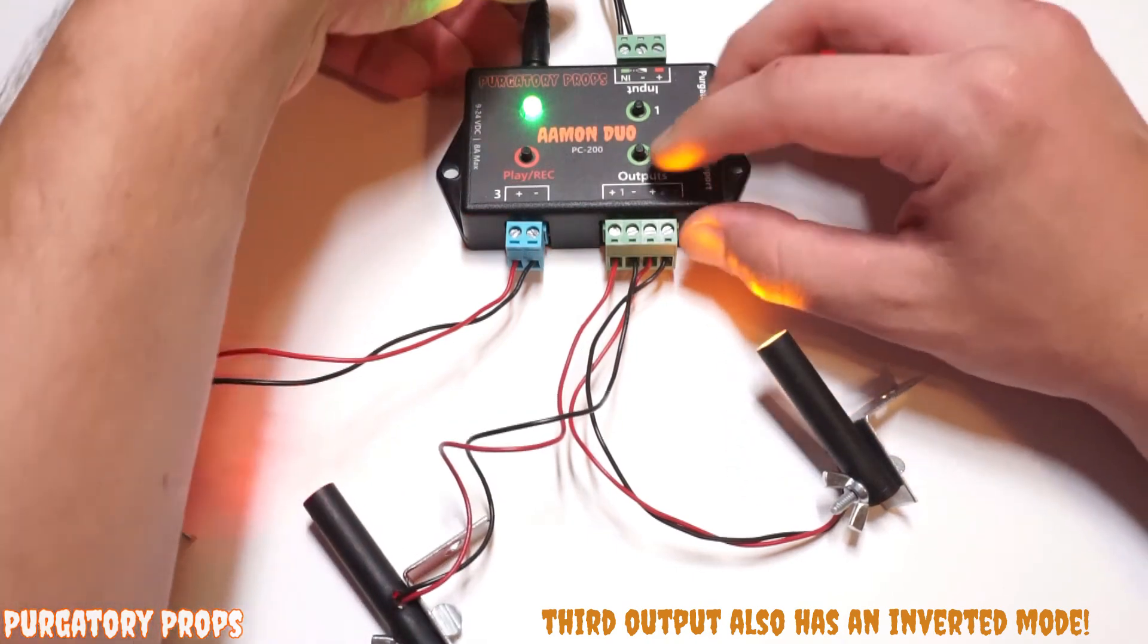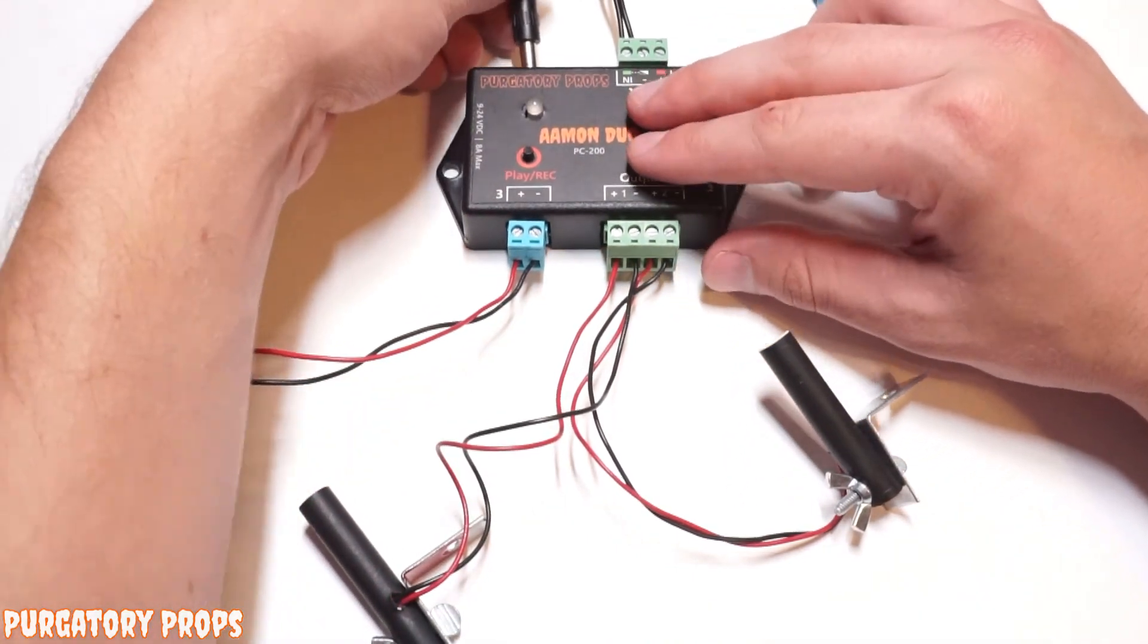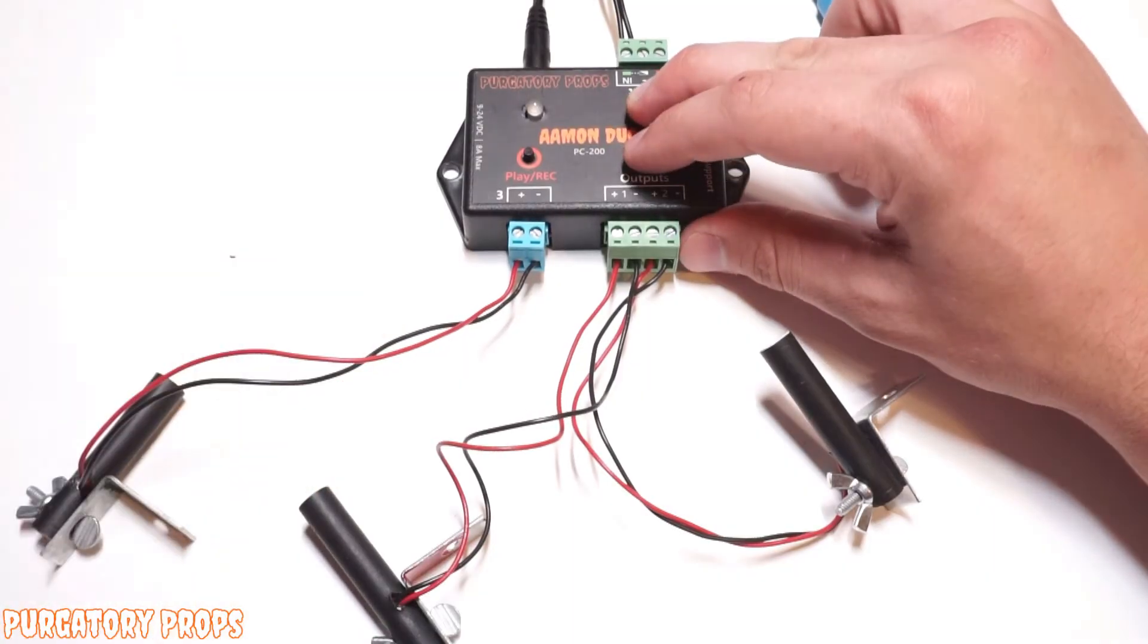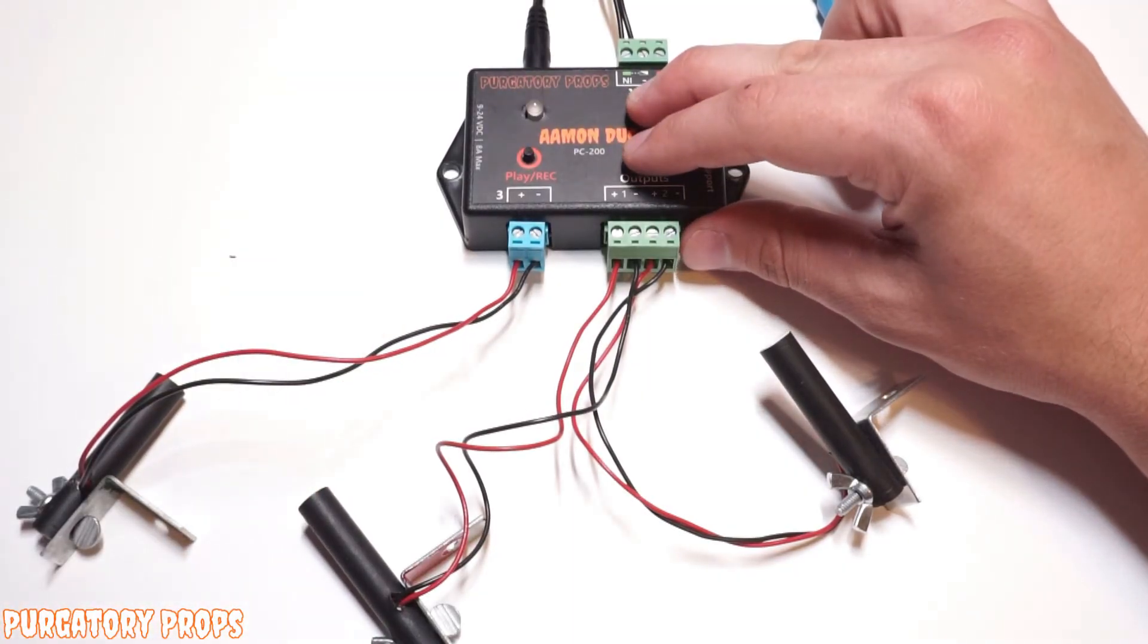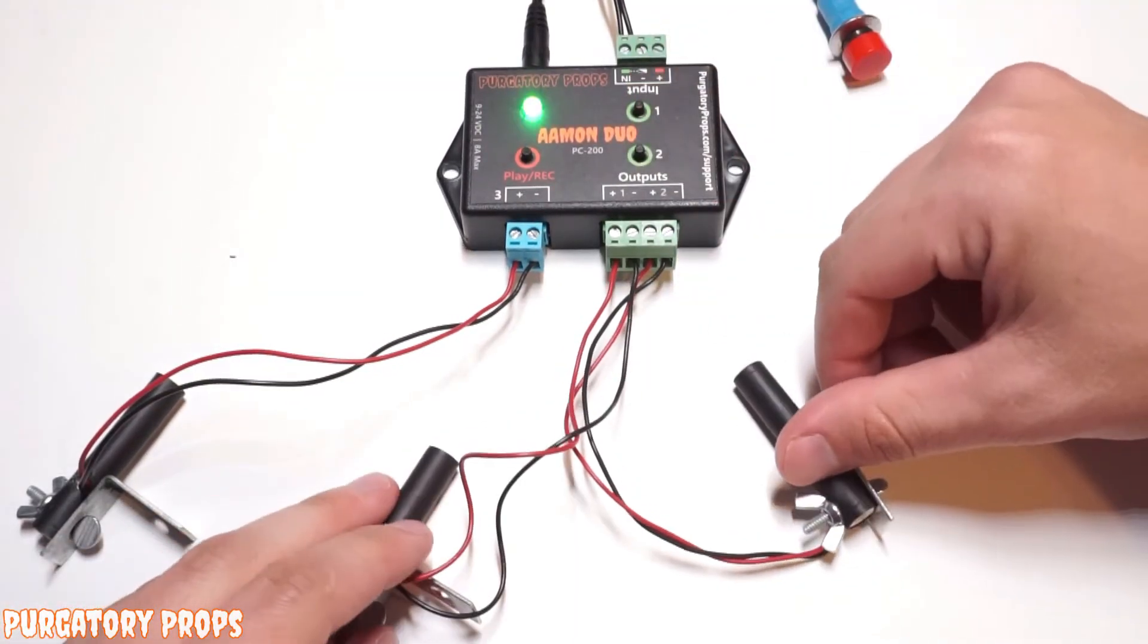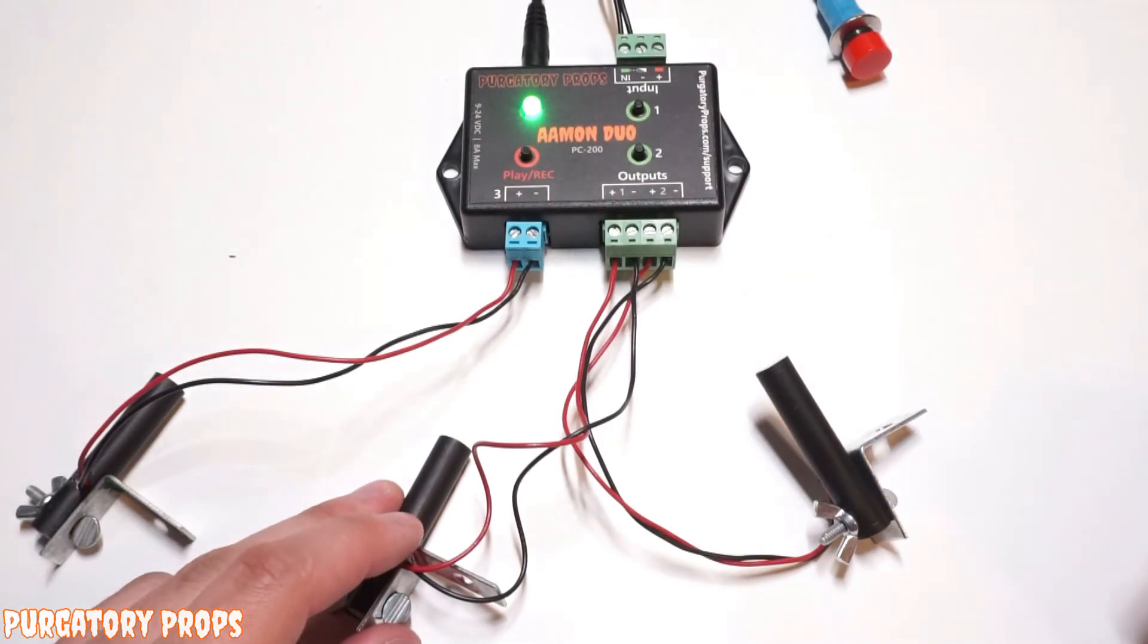You can turn those off by holding those same buttons, or you can hold both of them at the same time, and it'll toggle both those in inverted mode.